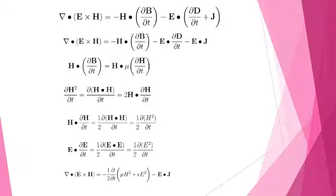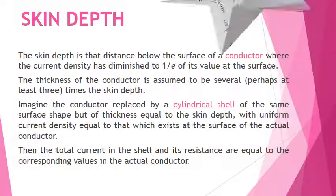Similarly, H dot dH by dT is equal to half into d H square by dT. By substituting these in the above equations, we can obtain the rate of decrease of waves, that is the Poynting Theorem: del dot E cross H equal to minus half d by dT into mu H square plus epsilon E square minus E J. This is the Poynting Theorem.